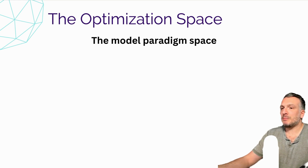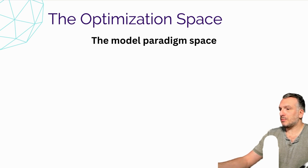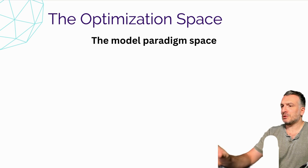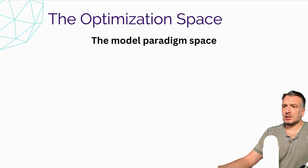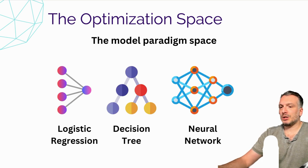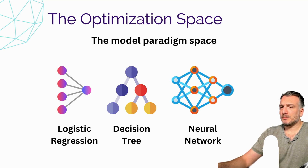Let's now talk about the model paradigm space. Many supervised learning algorithms could be used to solve the same problem. Algorithms like Naive Bayes, XGBoost, or neural networks could perform very differently depending on the specific dataset. So when we are trying to find the optimal transformation from features to the target, we could want to find the best model paradigm. We could try to solve the same problem using logistic regression, a decision tree, or neural networks — and not all models will perform the same on the same data.